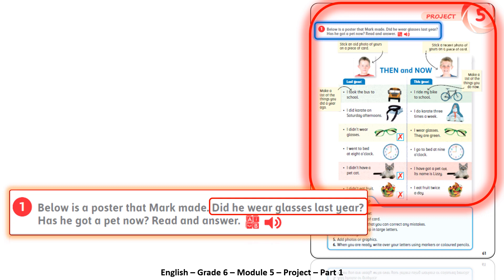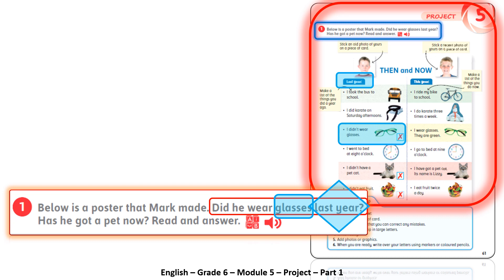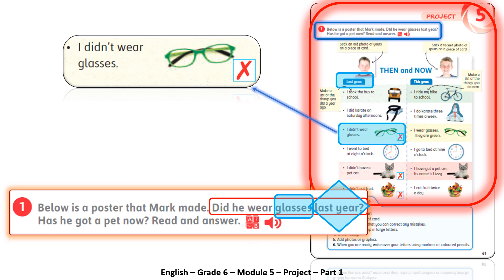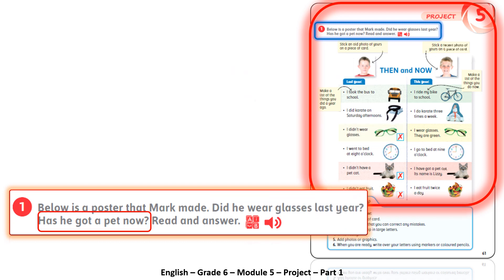Starting with question one: did he wear glasses last year? Another key word here is 'last year'. We go to the poster and find the 'last year' column, then search for glasses as a picture or word. Reading that section: 'I didn't wear glasses.' So the answer is no, he didn't.